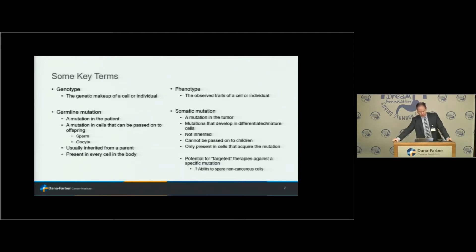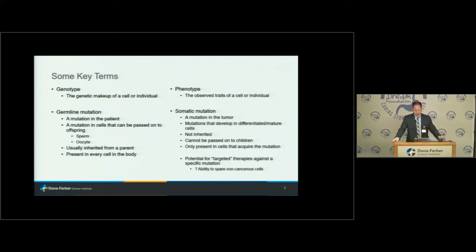Contrast that with a somatic mutation — an acquired mutation present only in certain tissues. In cancer, we're talking about a mutation in a tumor. These mutations develop in mature cells, are by definition not inherited, cannot be passed on to children, and are only present in the cells that acquire the mutation. These are the mutations we typically look for with targeted therapies. Targeting something present only in the cancer theoretically should spare non-cancerous cells from treatment effects, at least in theory.